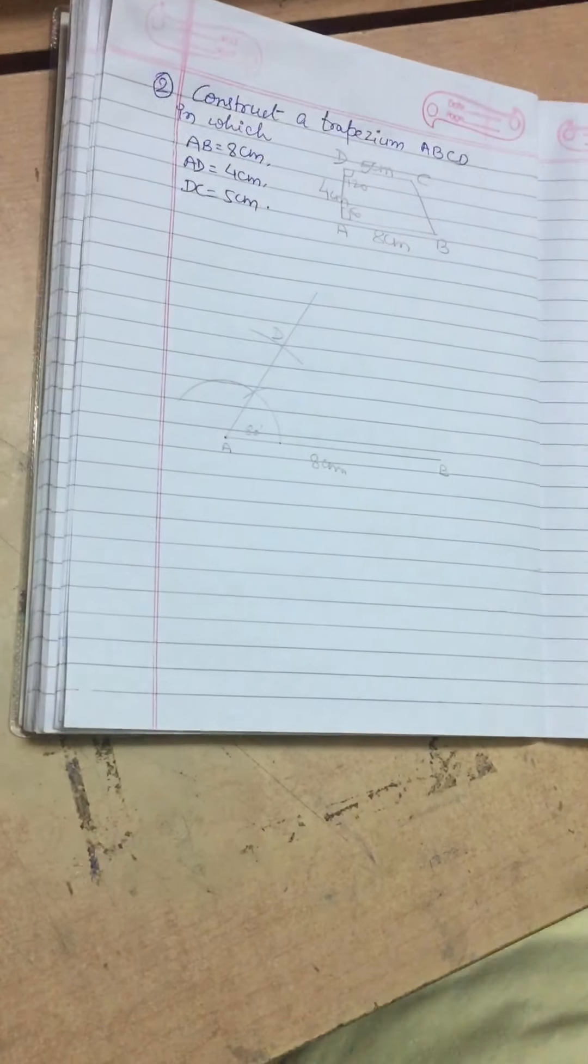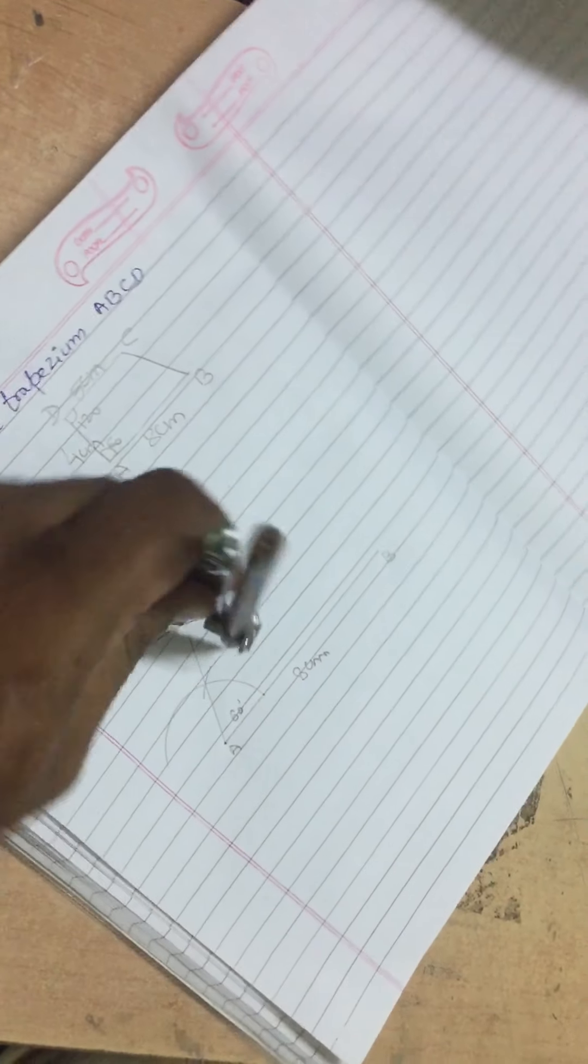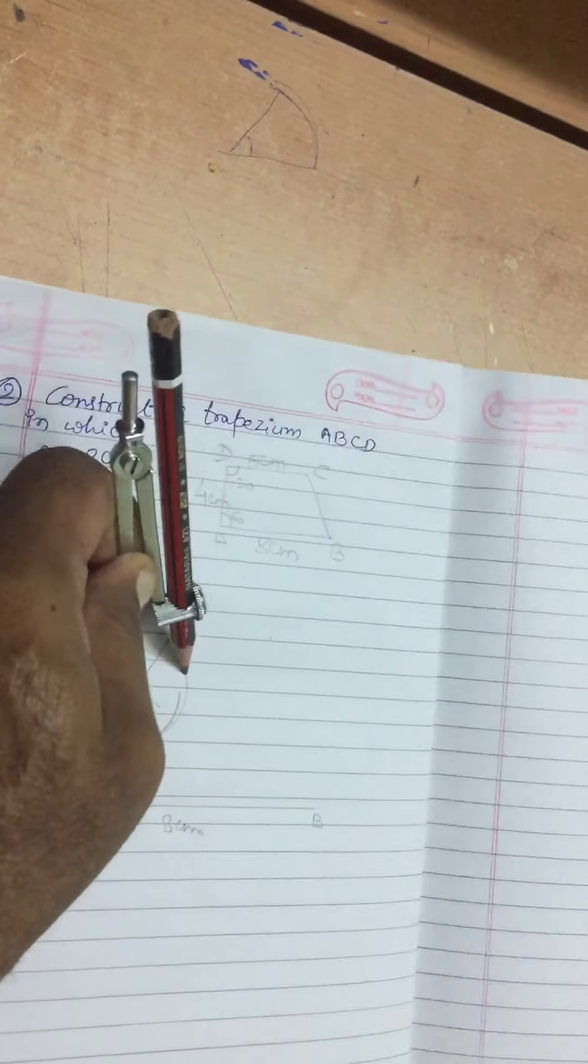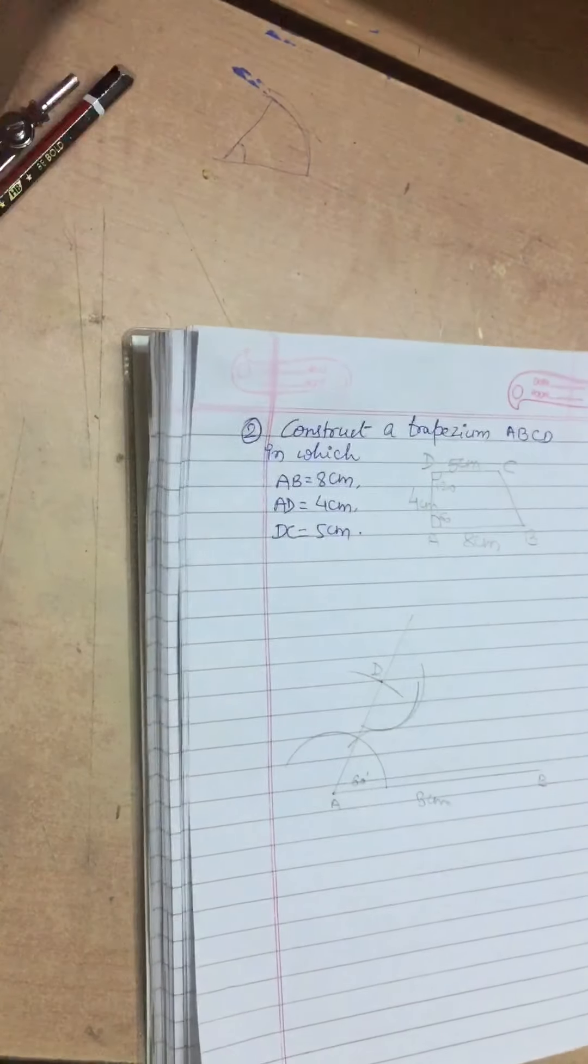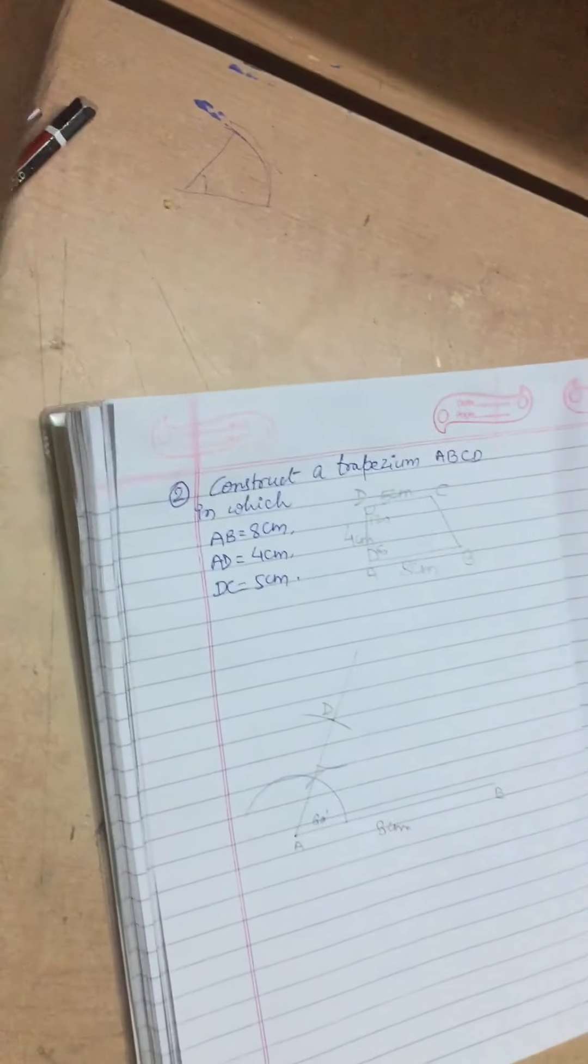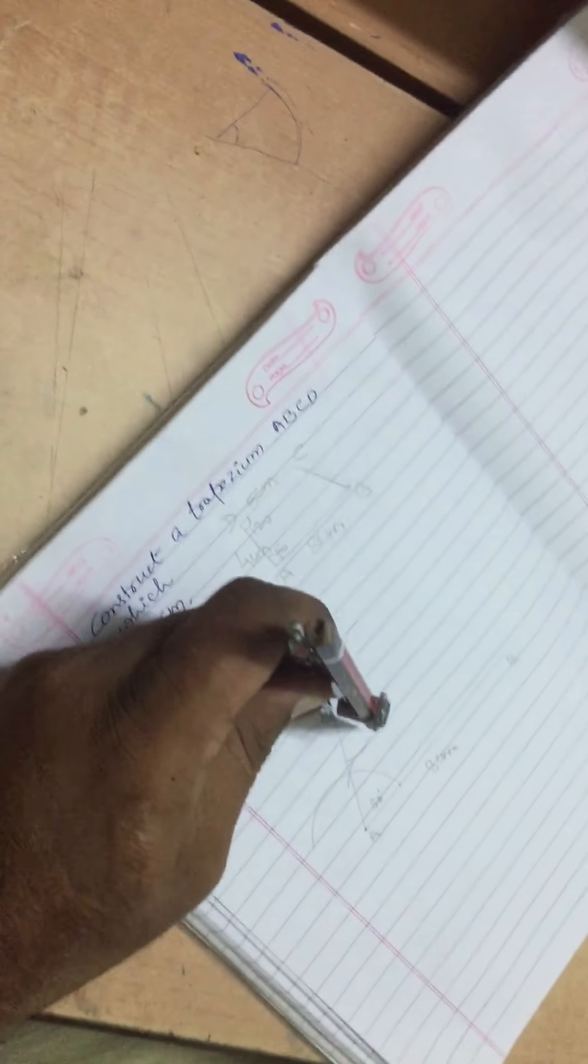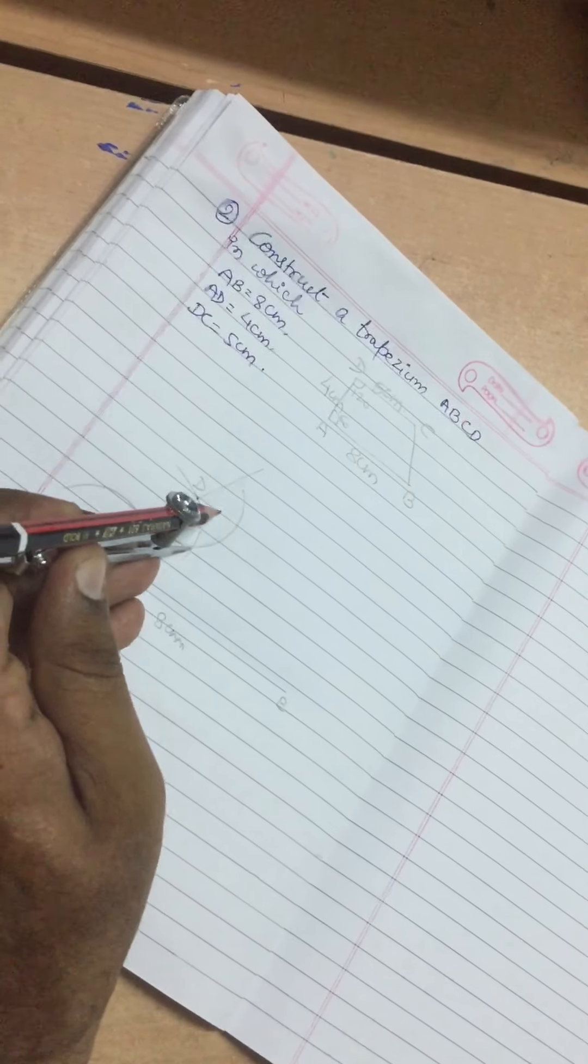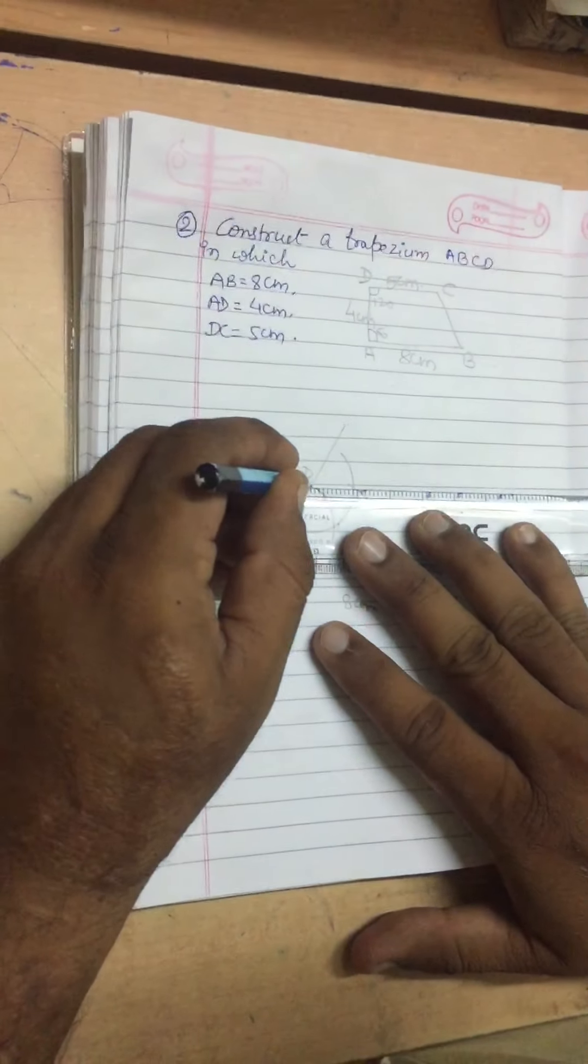Now we will construct 120 degrees at point D. Sorry, the compass got distorted. Let me use the eraser. This sort of problem you may face. Let us draw it again. First arc for 60 degrees and the second arc for 120 degrees. Let me join the arc.